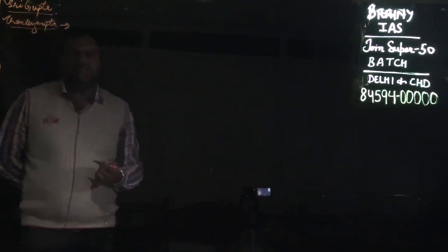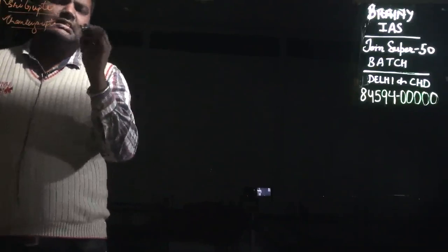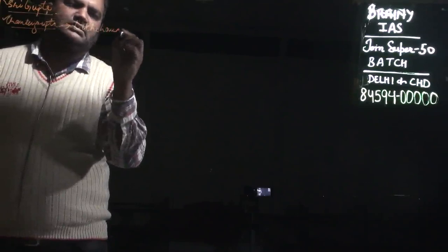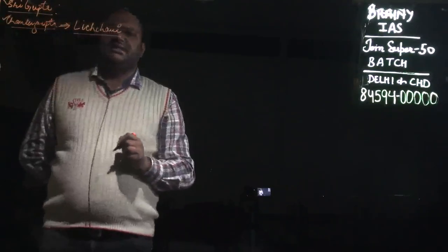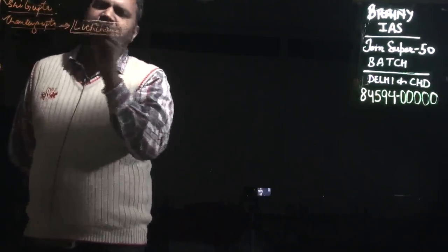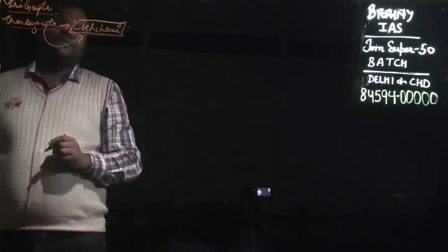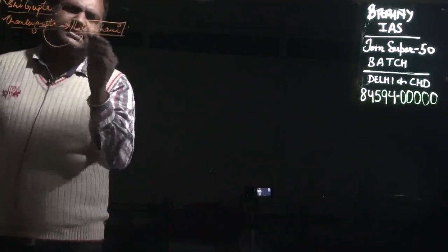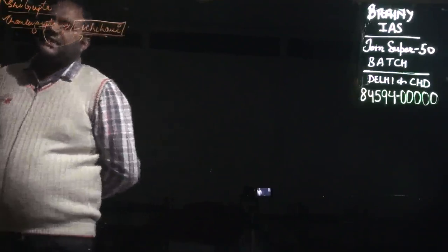Chandra Gupta the First had matrimonial alliances with a Lichchhavi princess, Kumara Devi. This alliance is important because we can see Chandra Gupta and the Lichchhavi lady depicted together in coins.